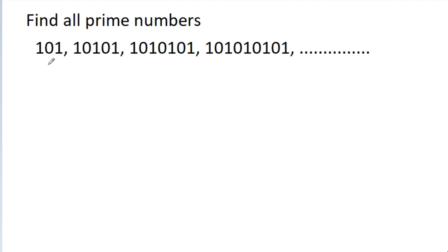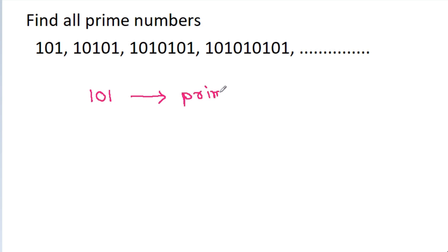In this video, we have a sequence of numbers and we have to find all the prime numbers. The first number is 101, and we can easily say that it is a prime number.